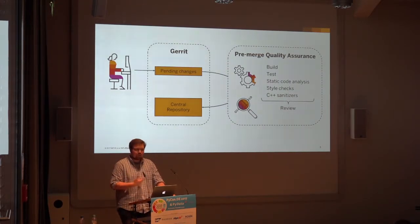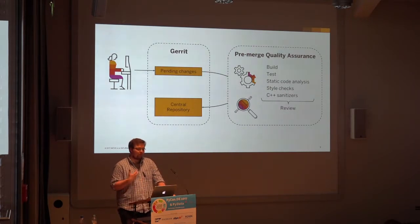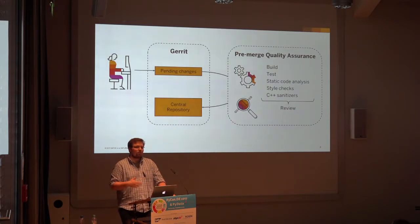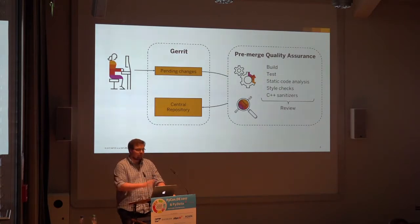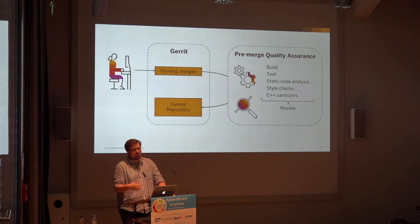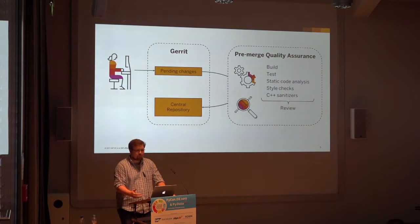After Gerrit receives a change, we trigger some pre-merge quality assurance processes. Even before the change hits our main repository, we apply automated processes to ensure our quality criteria. In our organization we have multiple quality assurance layers. For a developer it's quite nice because at the end of the day you get a review from a specialized review team that says your change looks good, or you get valuable feedback about where to look and which component has a problem.